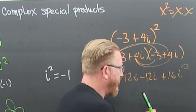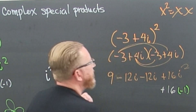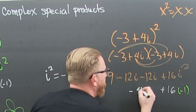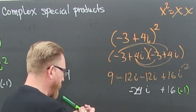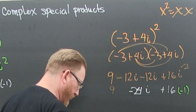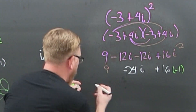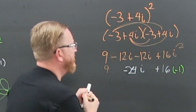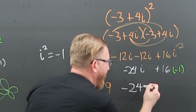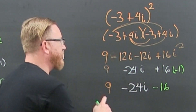So that 16i² becomes minus 16. Combine the like terms: minus 12i and minus 12i gives minus 24i. Bring down the nine. So we have nine minus 16, which is minus seven, minus 24i.